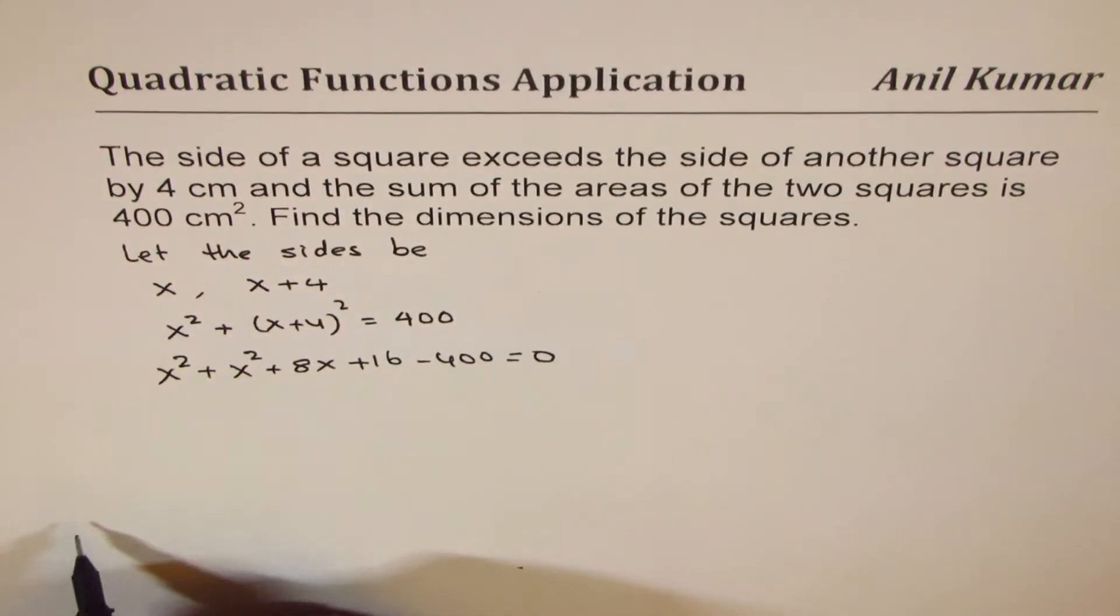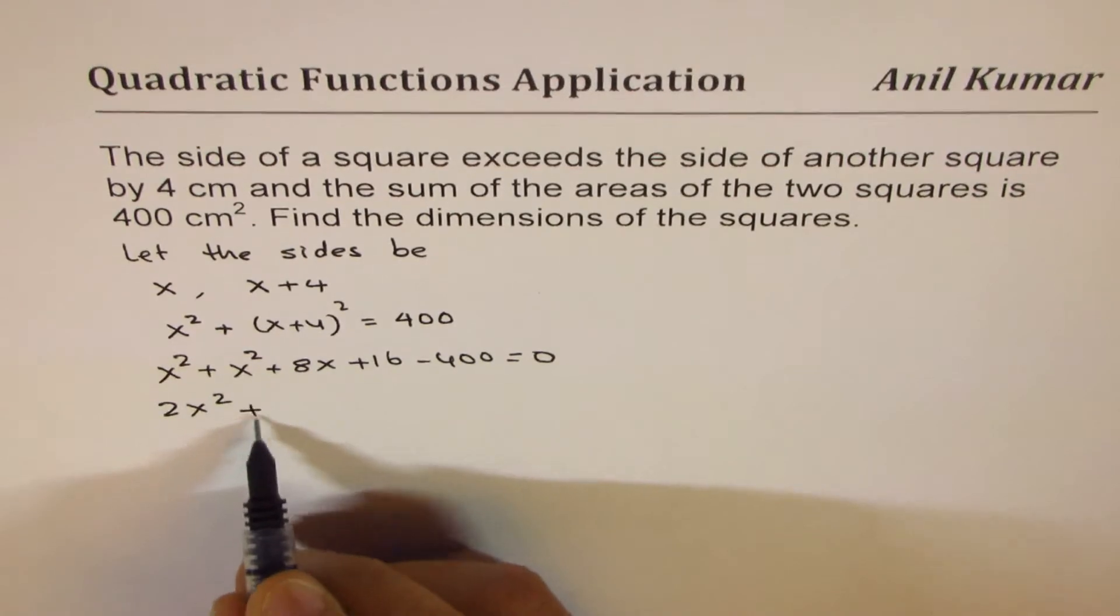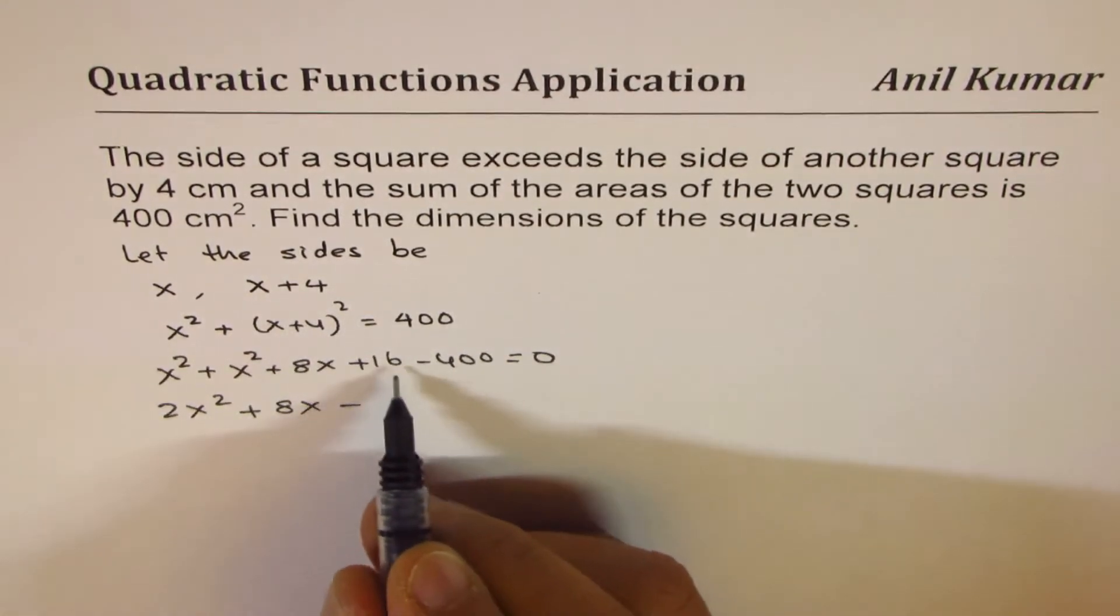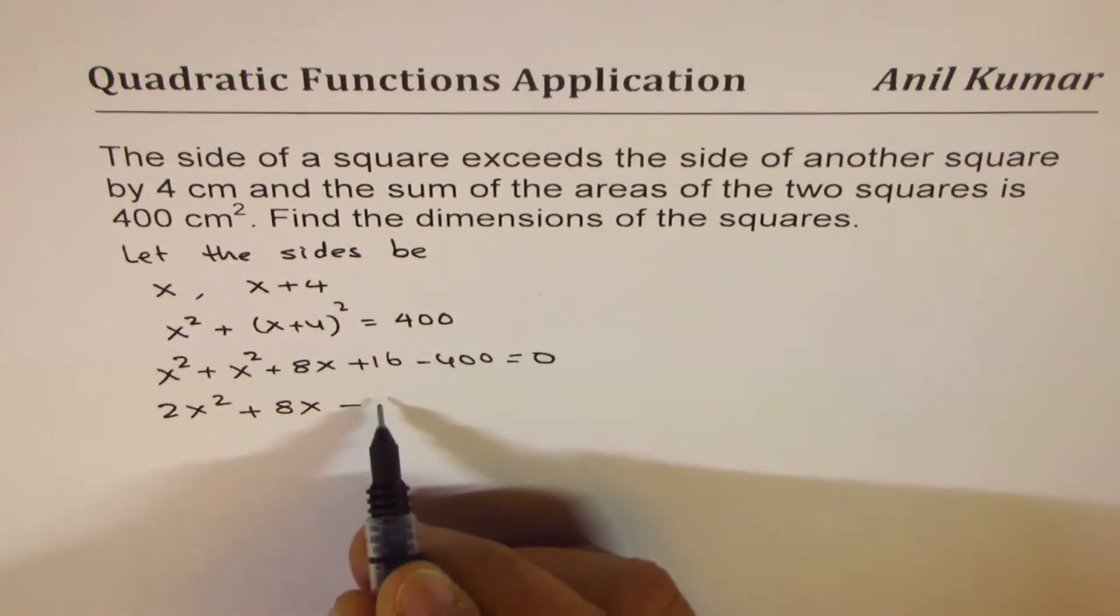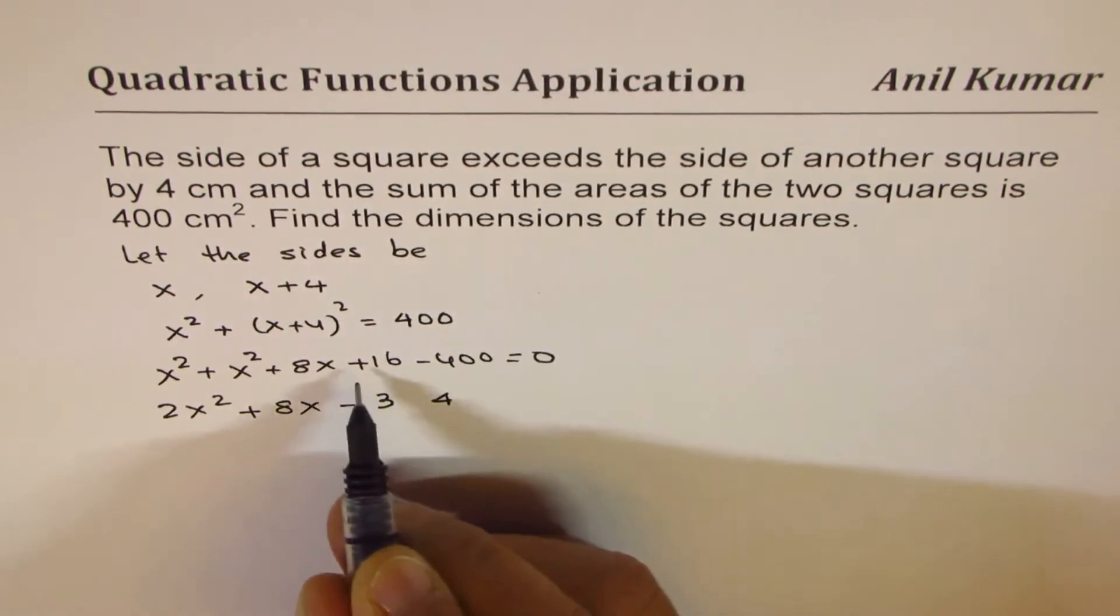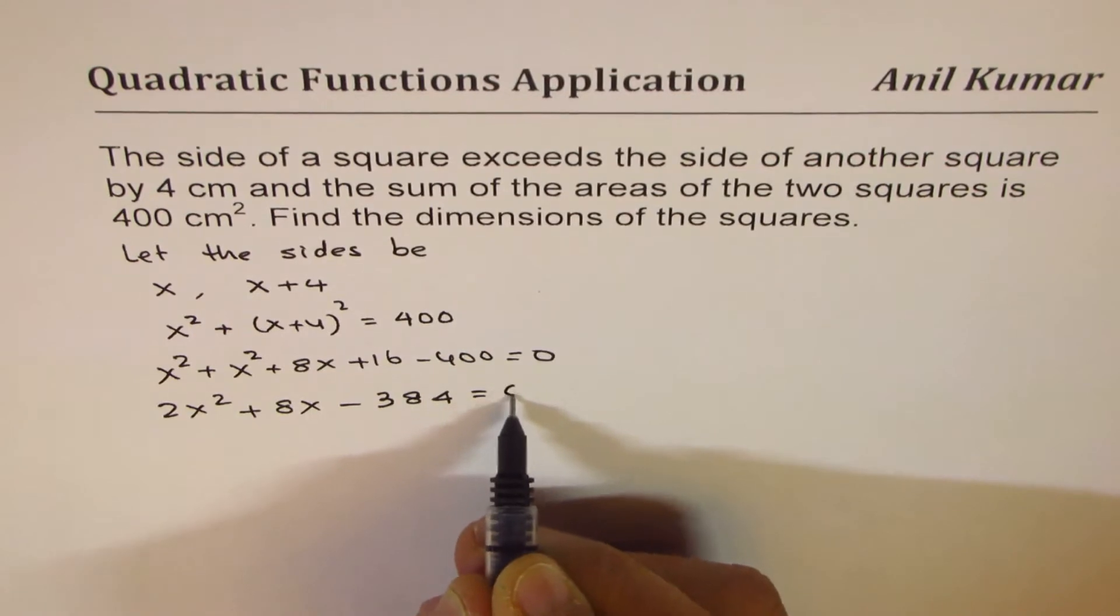2x² + 8x, and minus we take away 16 from 400, that means 384. So if you take 4 from 9 and from 400 we get 384 equals 0.